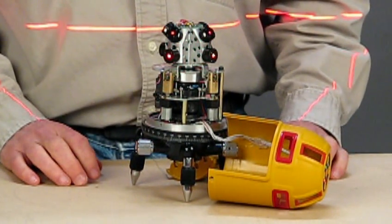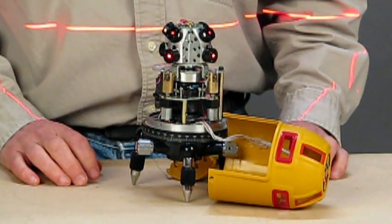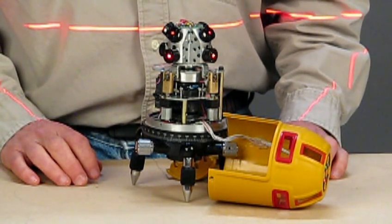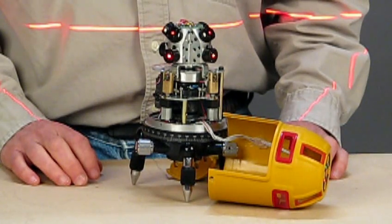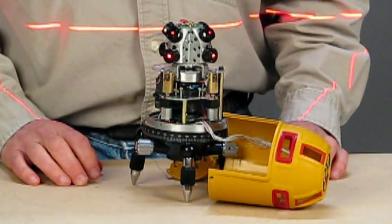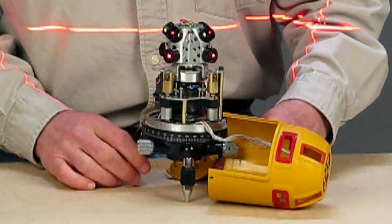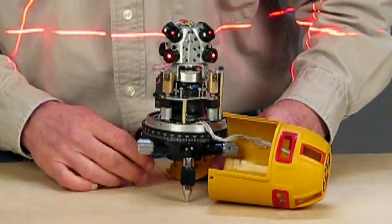The servo motors are controlled by a device that can best be described as a miniature spirit level. A sensor tracks the position of the bubbles and tells the servo motors the direction they need to go to bring the bubbles to center. I'm now going to adjust the laser so it's out of level. If you listen closely, you can hear the servo motors work to bring it back to where it ought to be.